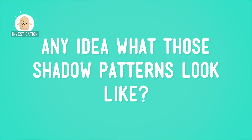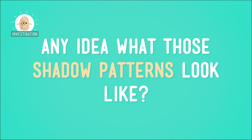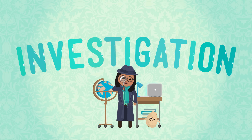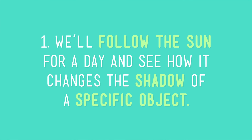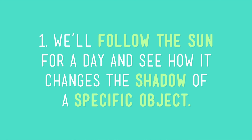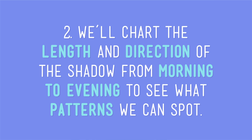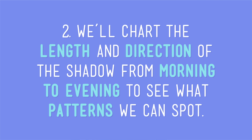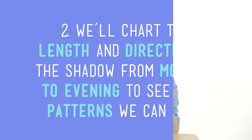And since the movement of the Sun follows patterns during the day, so does the movement of shadows. Any idea what those shadow patterns might look like? Let's find out! We'll follow the Sun for a day and see how it changes the shadow of a specific object. Then we can chart the length and the direction of the shadow from morning to evening to see which patterns we can spot.